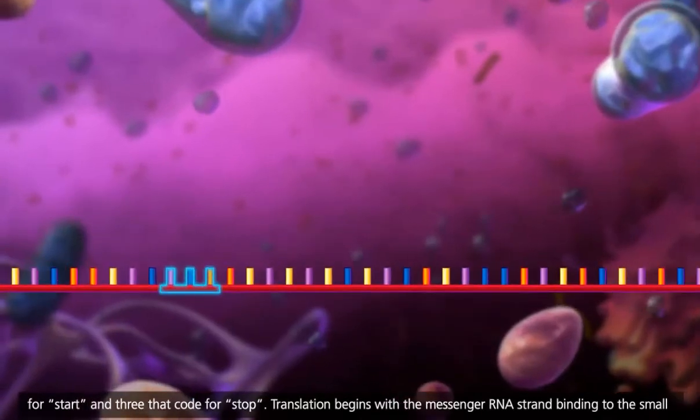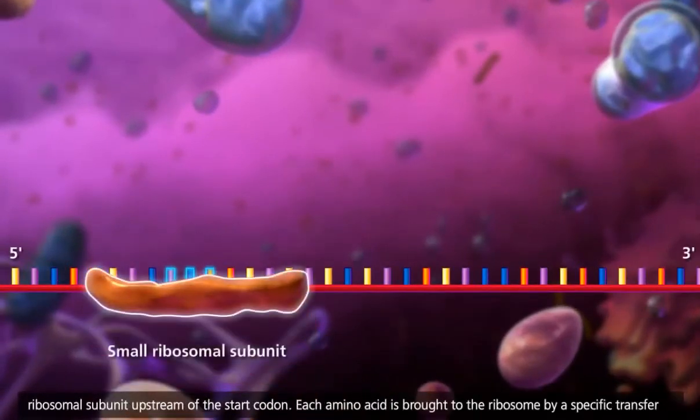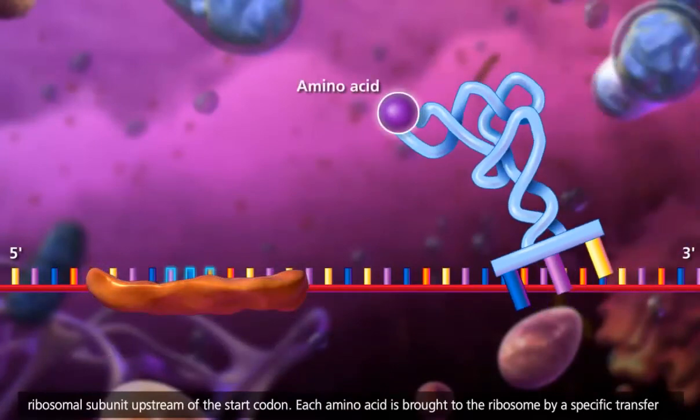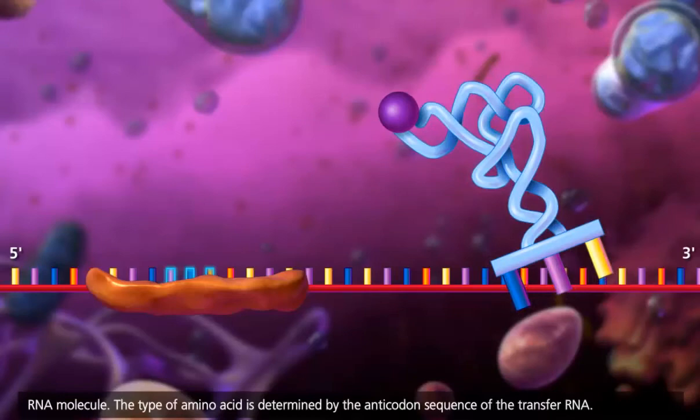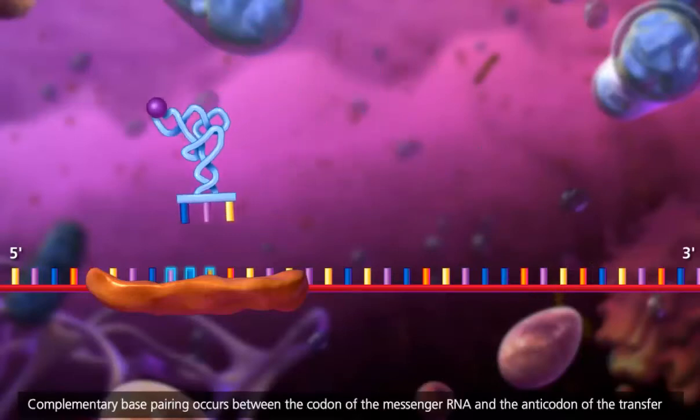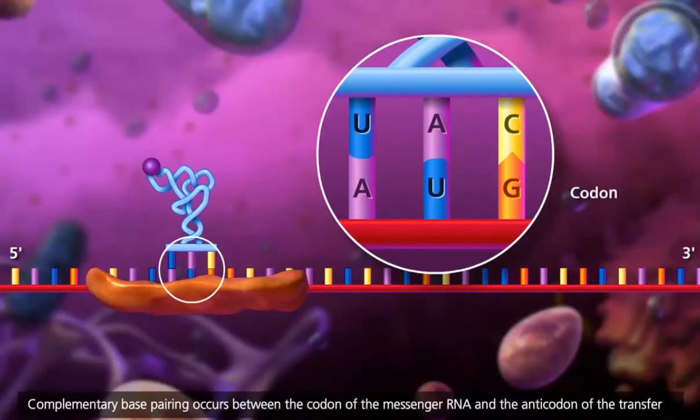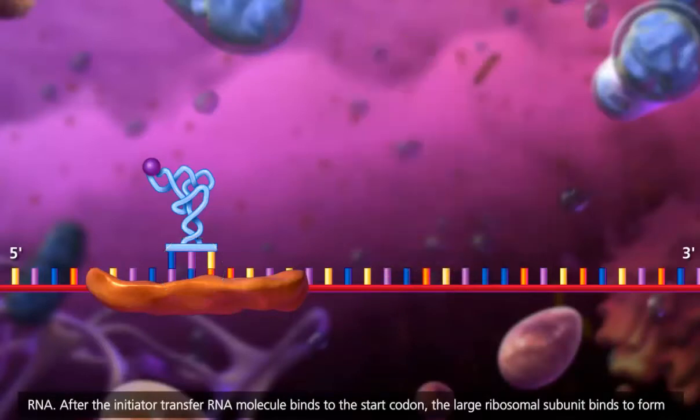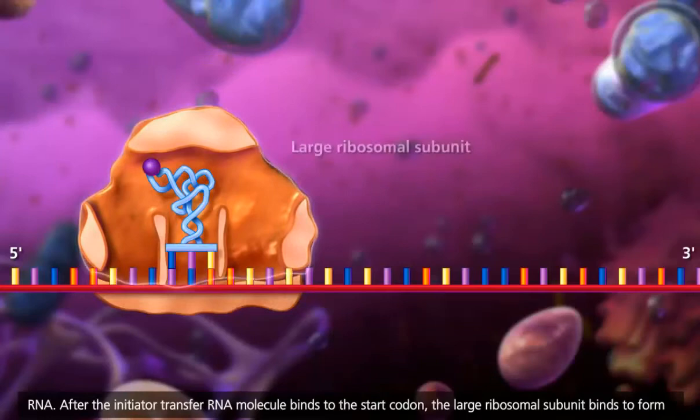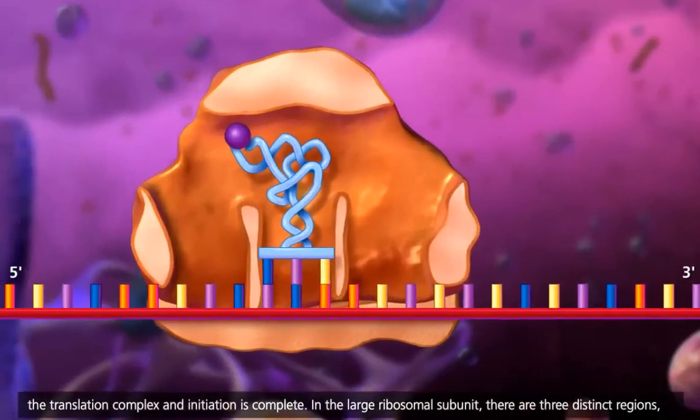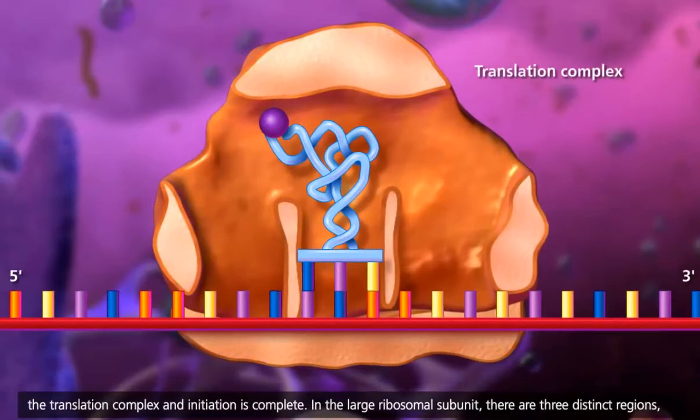Translation begins with the messenger RNA strand binding to the small ribosomal subunit upstream of the start codon. Each amino acid is brought to the ribosome by a specific transfer RNA molecule. The type of amino acid is determined by the anticodon sequence of the transfer RNA. Complementary base pairing occurs between the codon of the messenger RNA and the anticodon of the transfer RNA. After the initiator transfer RNA molecule binds to the start codon, the large ribosomal subunit binds to form the translation complex, and initiation is complete.